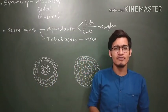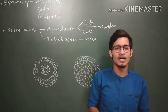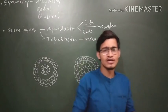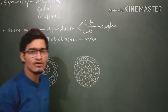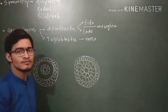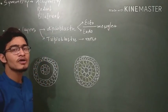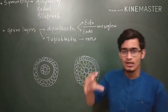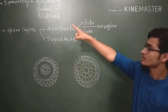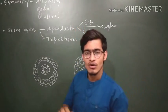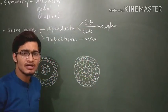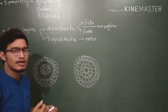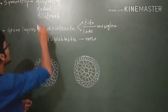Hello guys and welcome back to another video from Vipin Sharma Bailari Tutorials. In this video we are going to talk about the classification of animals on the basis of their symmetry, or on the basis of the number of germ layers which are present in their body. The first criteria is going to be symmetry — whether the organism is asymmetric, bilaterally symmetrical, or radially symmetrical.